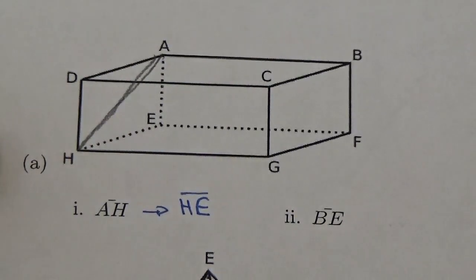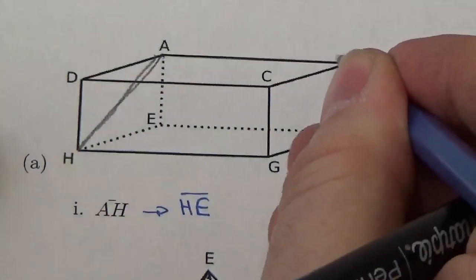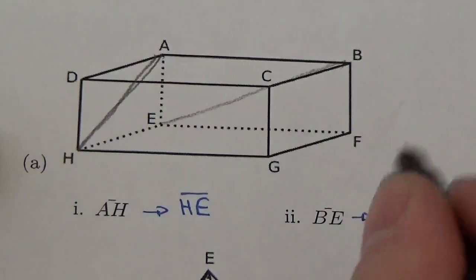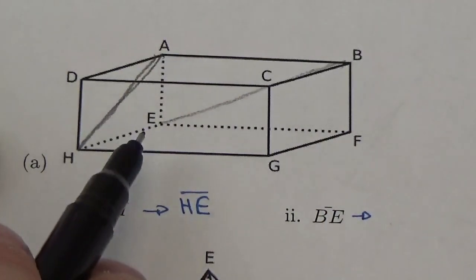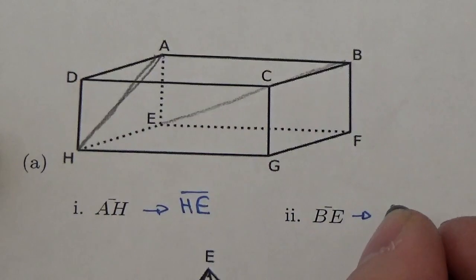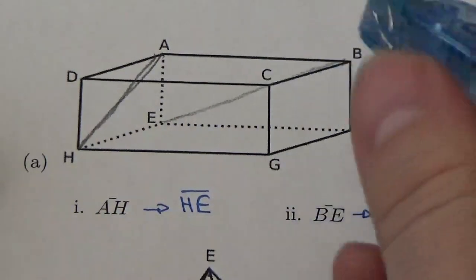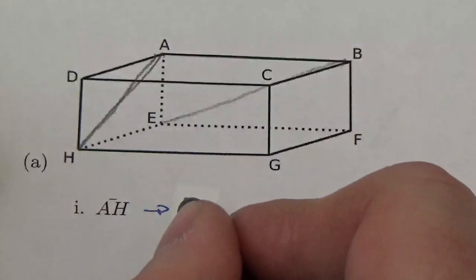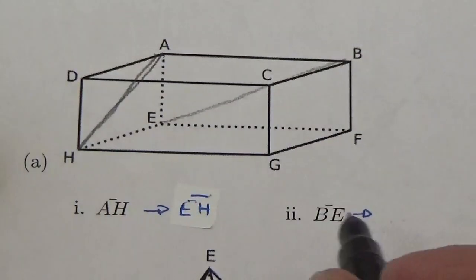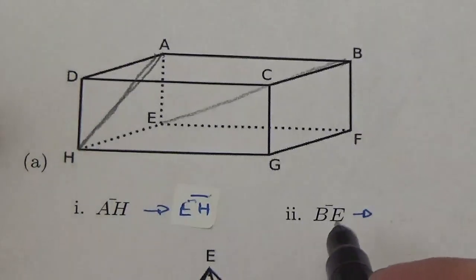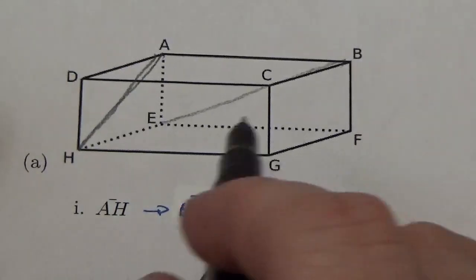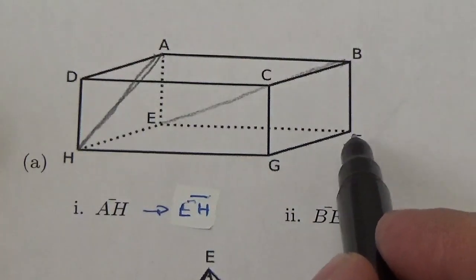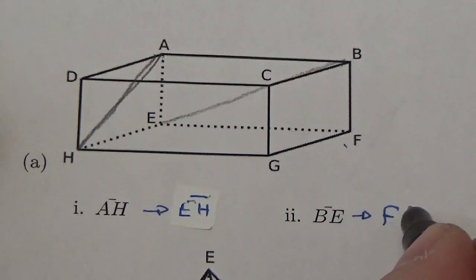BE is this line segment from B along that back face. When I project that onto the base plane, E is already on that base plane. Orders are likely important here, so this would be EH. Now for EB: E is going to stay the same, but B is going to get projected down onto F there. So this would be FE.